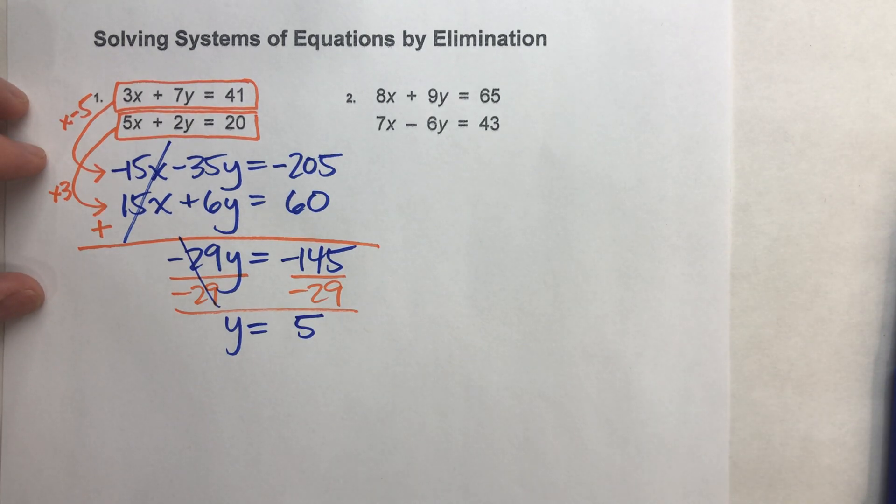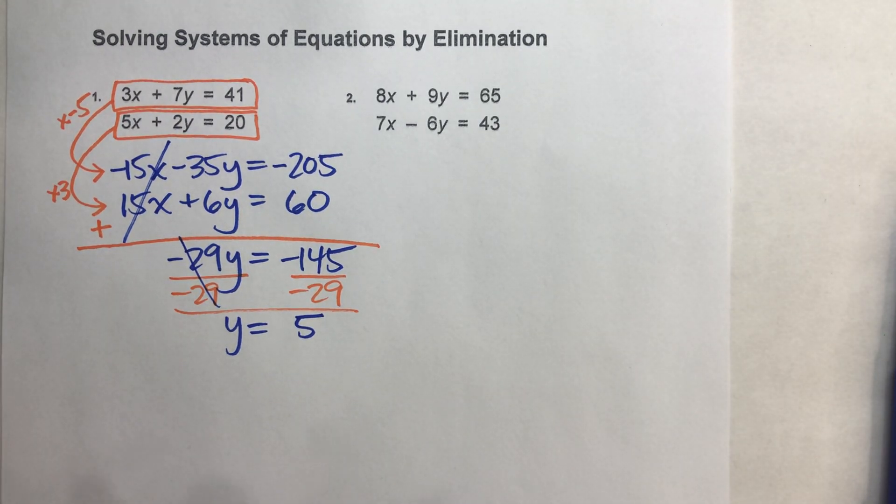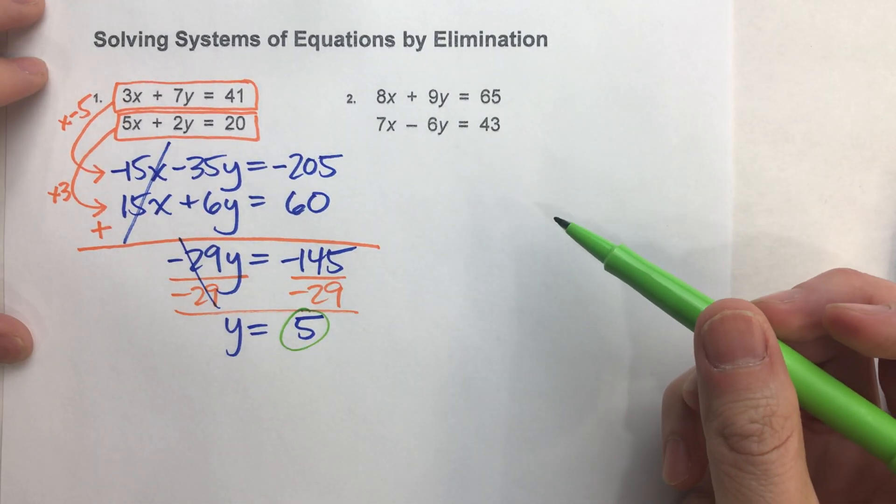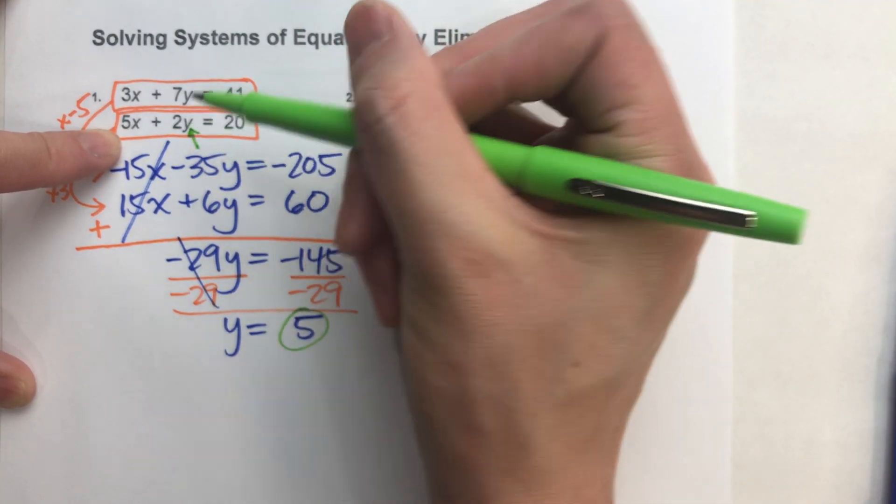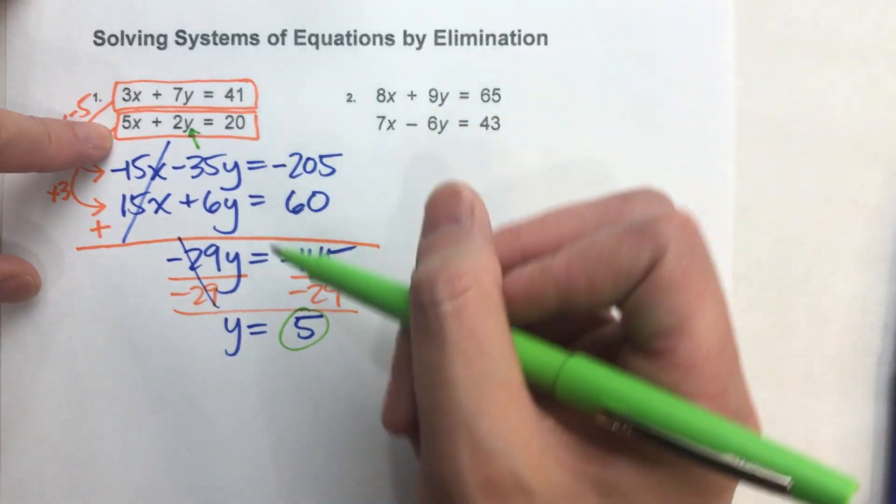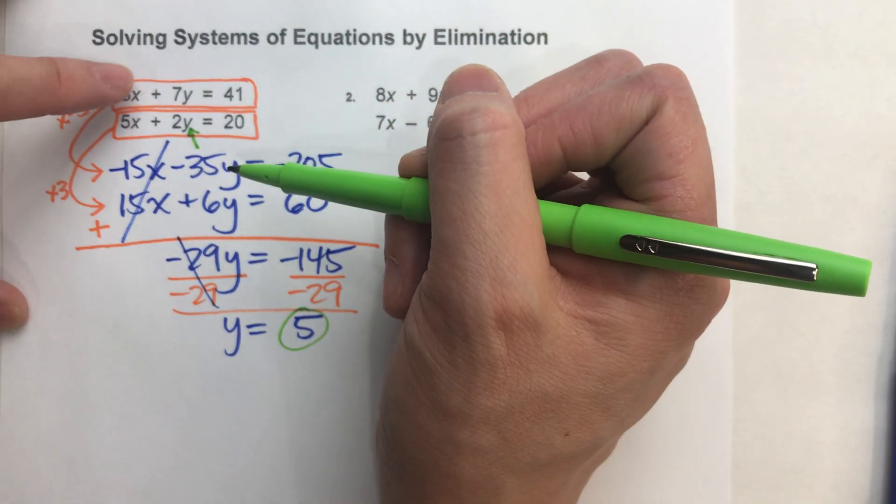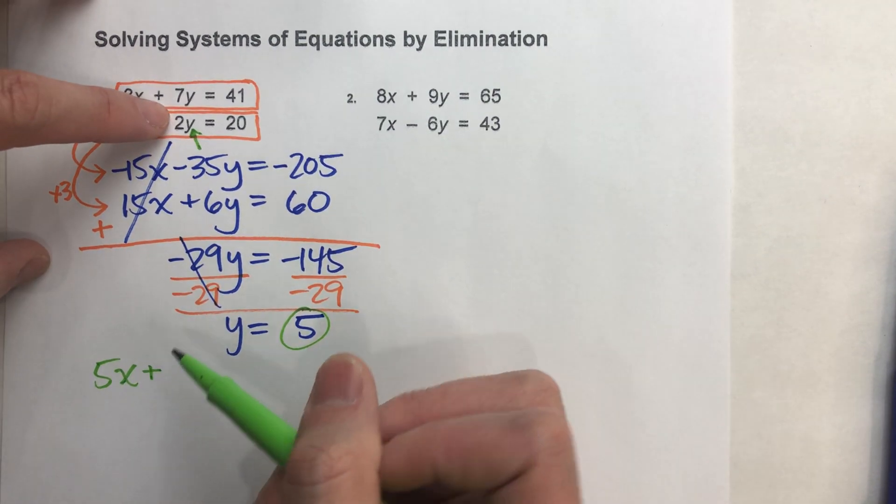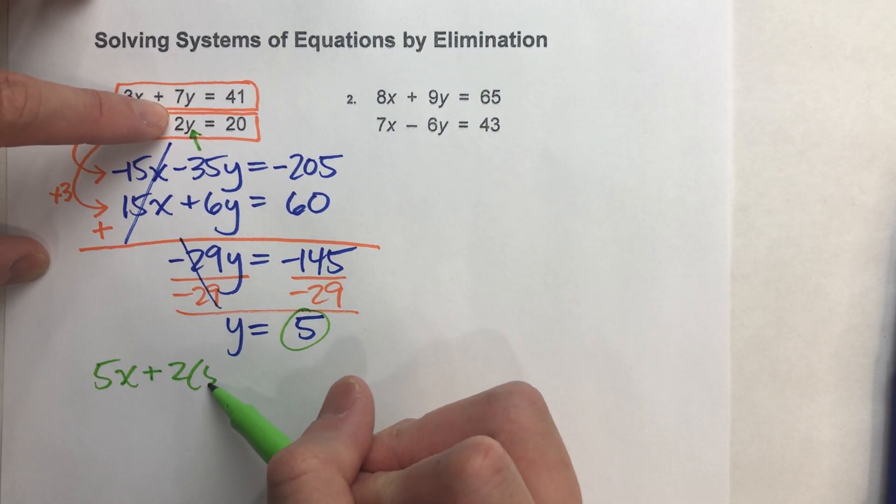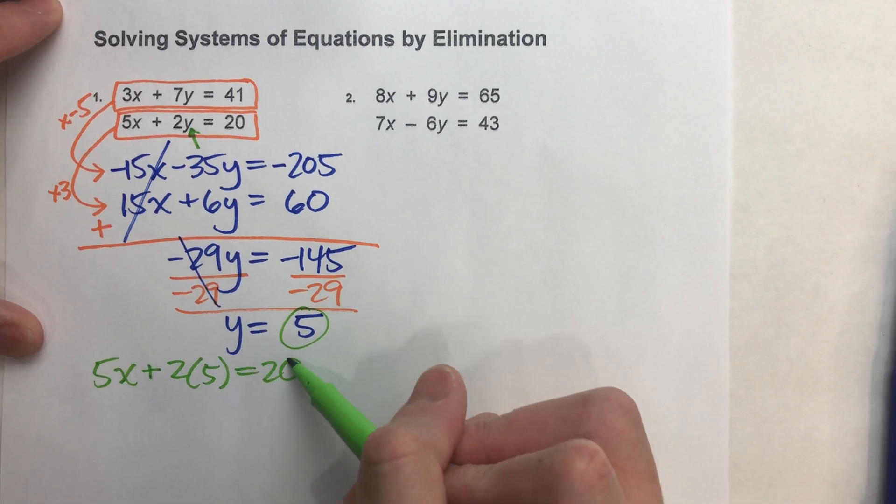And if I want to get my x value, I'm just going to put 5 back into one of the original equations. I'll pick the bottom one. It's a little bit easier. You should get the same answer no matter which equation you put it into. I'm putting it into the second one because they're smaller numbers. I've got 5x plus 2 times whatever y is. In this case, y is 5 equals 20.